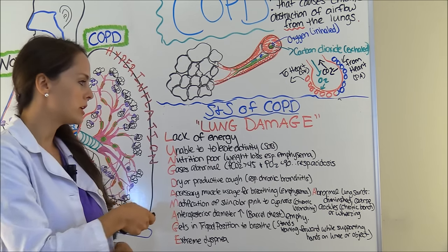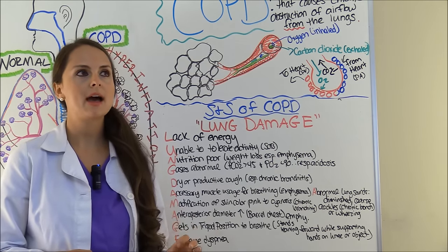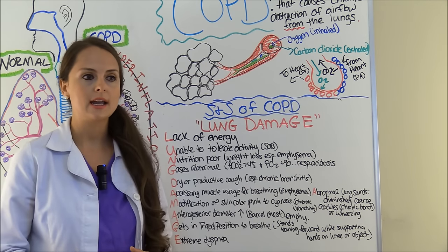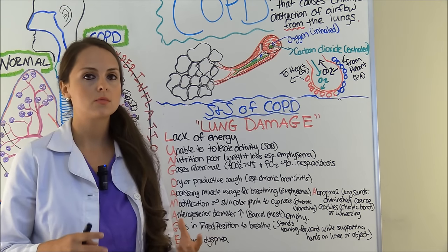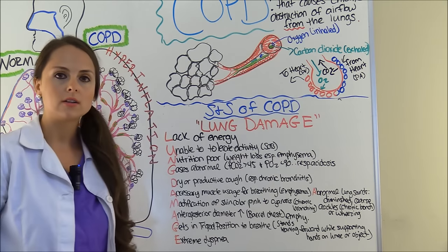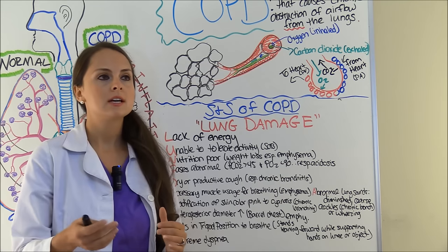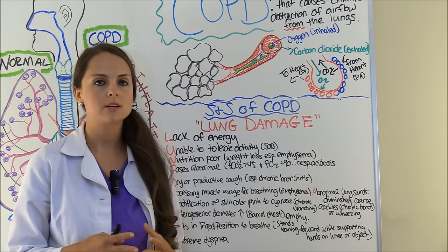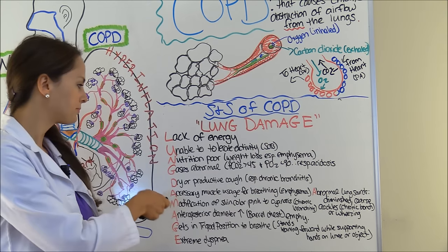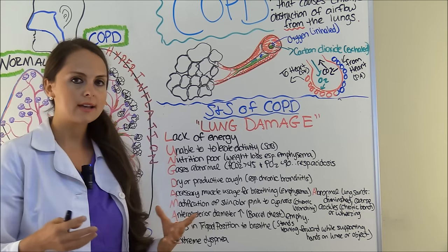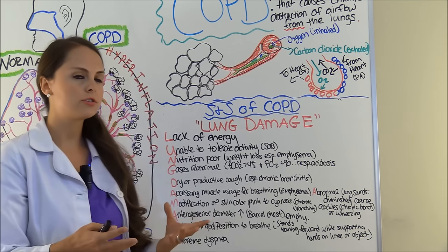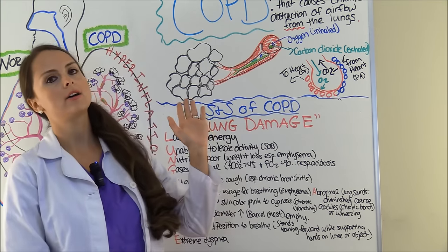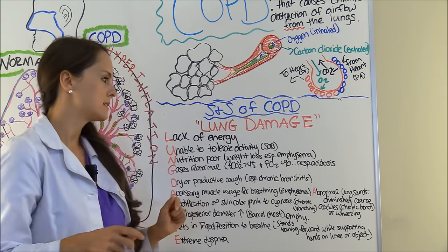N is for nutrition being poor, especially in emphysema patients. Thinking back to the patho: they spend a lot of energy breathing and burn more calories than a person with healthy lungs would just from breathing, so they have weight loss. Also, for severely affected patients, just chewing and swallowing food exhausts them, so they may not be up to eating. G is for gases abnormal — arterial blood gases: PCO2 will be greater than 45 and PO2 less than 90, because they have low oxygen and high carbon dioxide, usually resulting in respiratory acidosis.